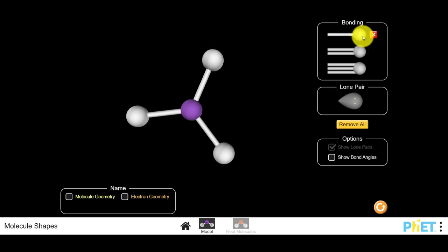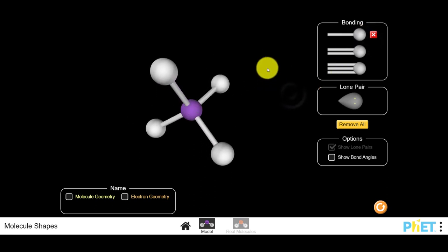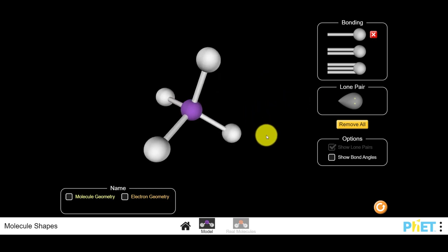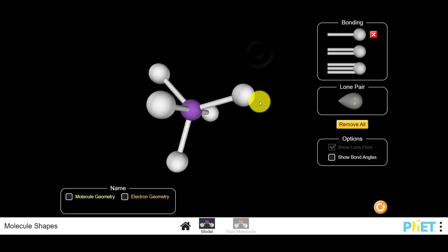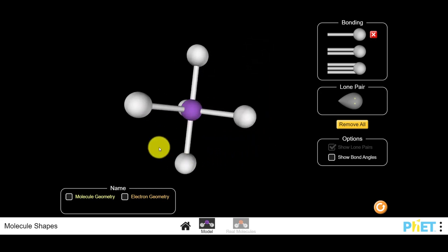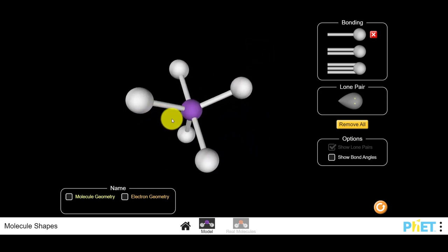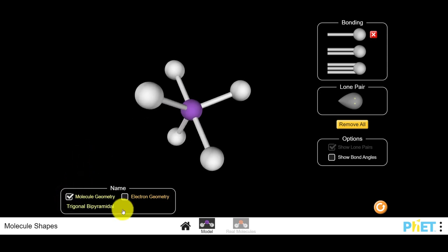Three sites trigonal planar, four sites tetrahedral. These are the shapes that we've seen before. What happens when we put five sites on the central atom? You get this shape right here. And if I click on the tile that gives us molecular geometry, it tells us that this shape is called a trigonal bipyramid.